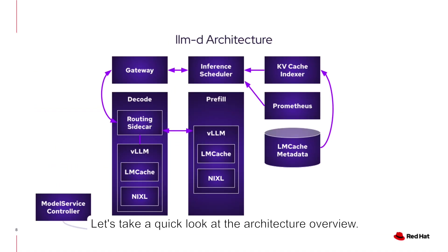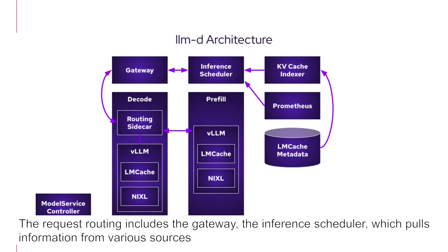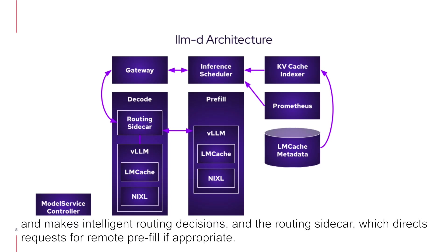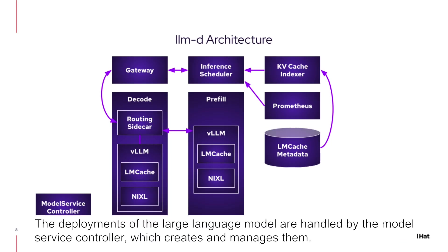Let's take a look at the architecture overview. The request routing includes the gateway, the inference scheduler — which pulls information from various sources and makes intelligent routing decisions — and the routing sidecar, which directs requests for remote pre-fill if appropriate. The deployments of the large language model are handled by the model service controller, which creates and manages them.